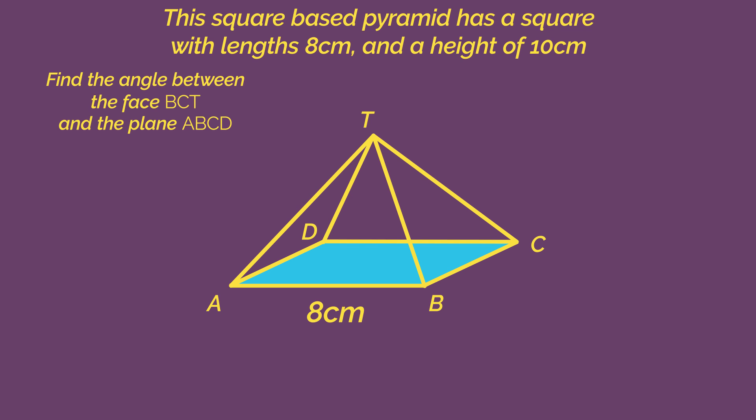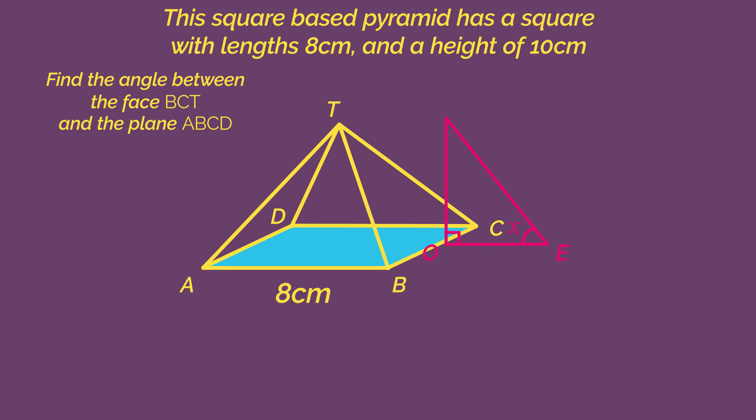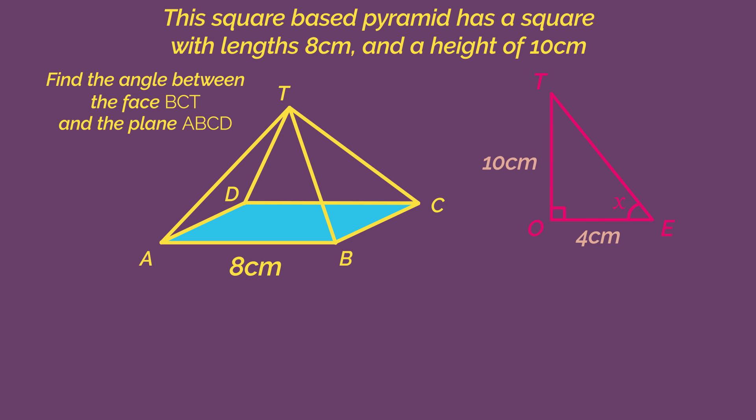Right angles are only found between vertical and horizontal lines. So we need to drop a vertical from T down to the centre of the horizontal base. Now we have a right angle triangle with a base of 4 because it's half the length of AB, and a height of 10.